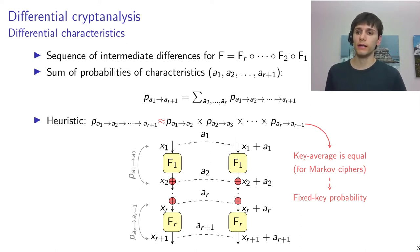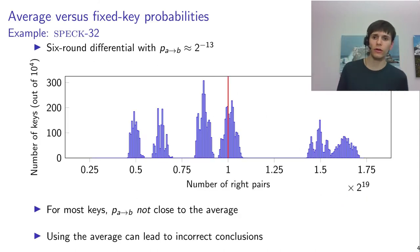So let's take a look if that actually makes sense. So here's an example of a six-round differential in SPECK32. The red line here is the computed average, so the expected number of right pairs, or same thing as the probability.